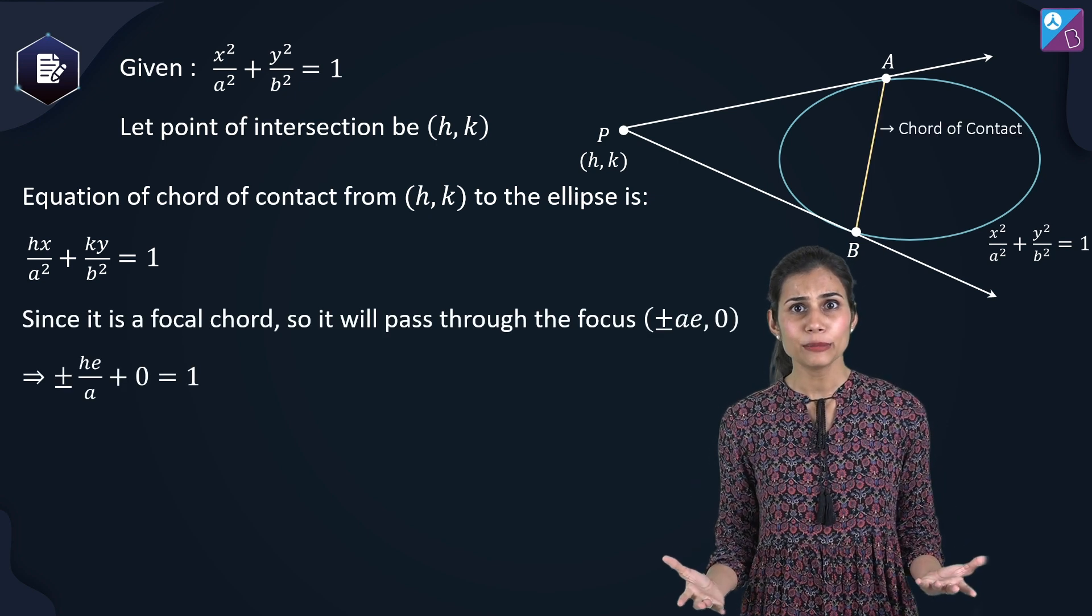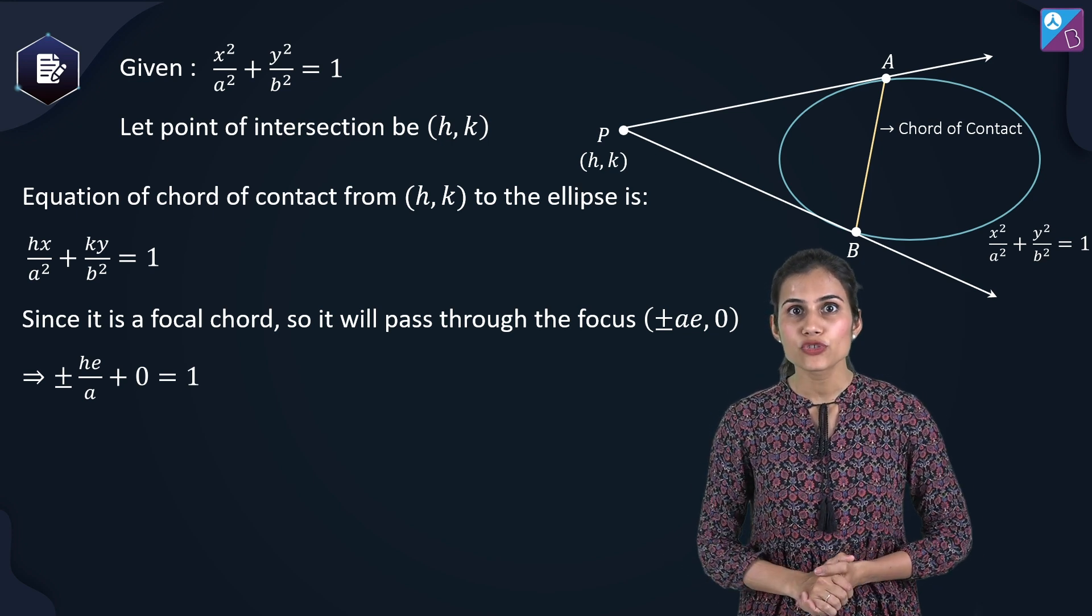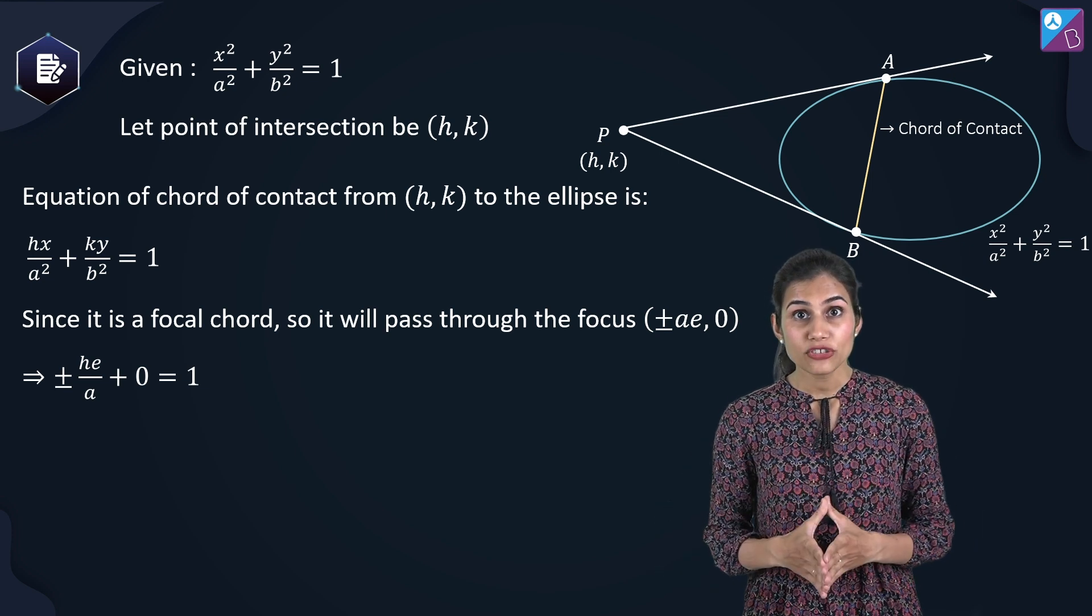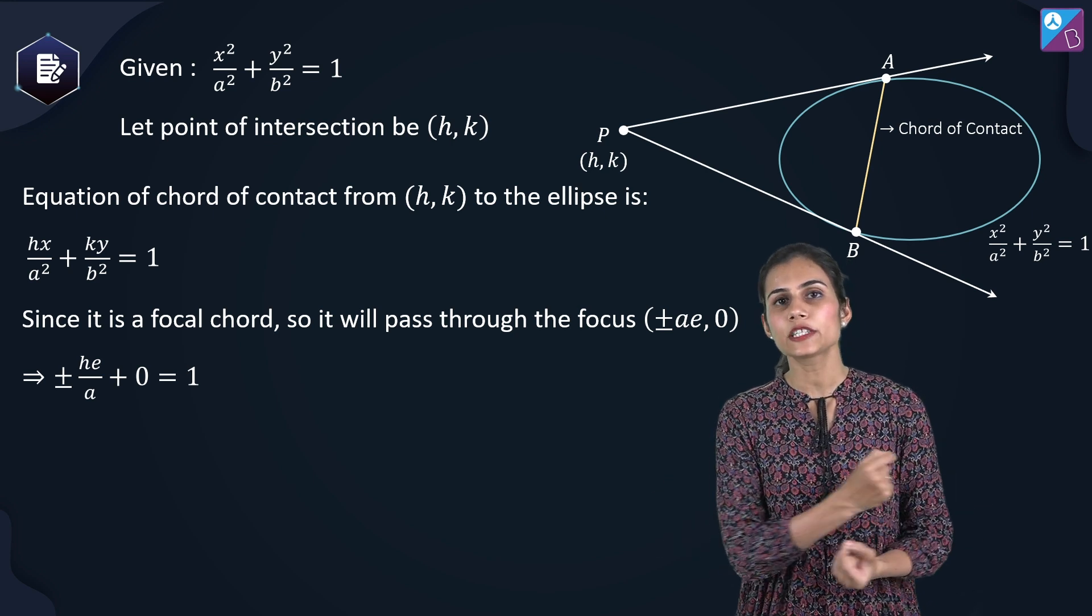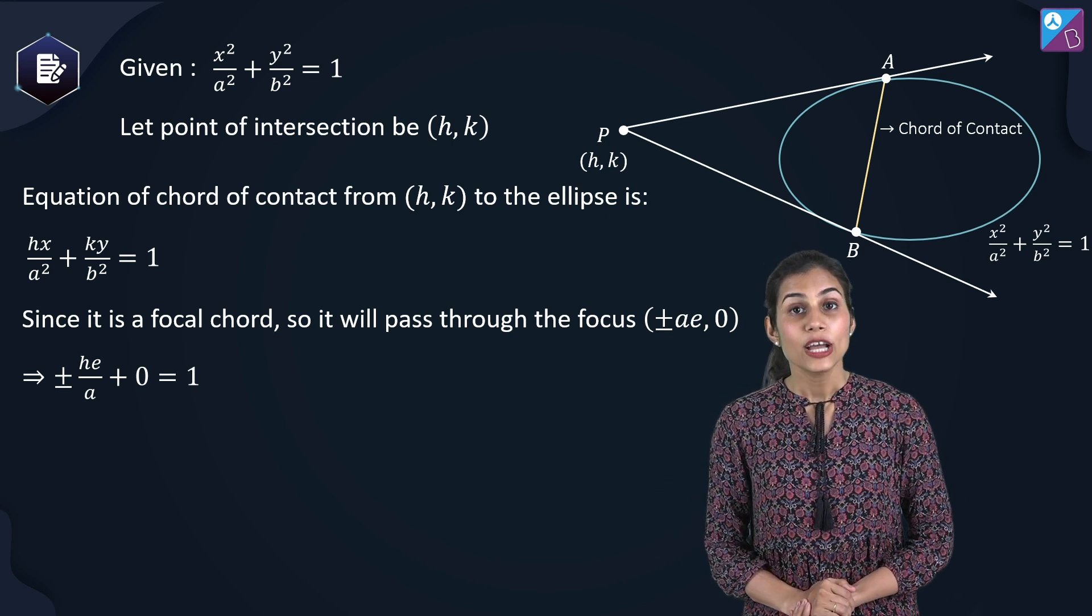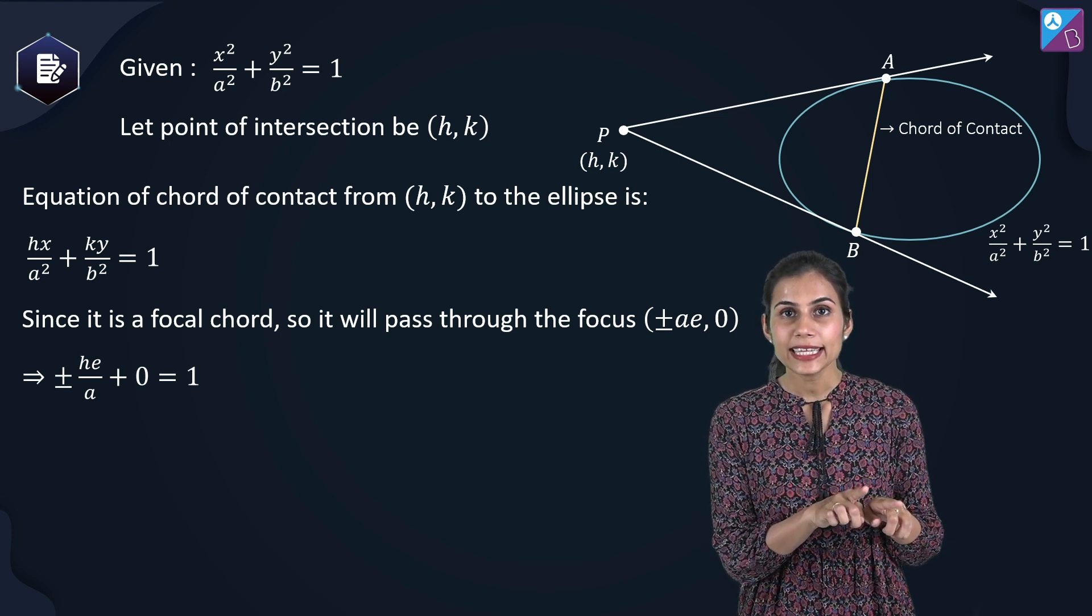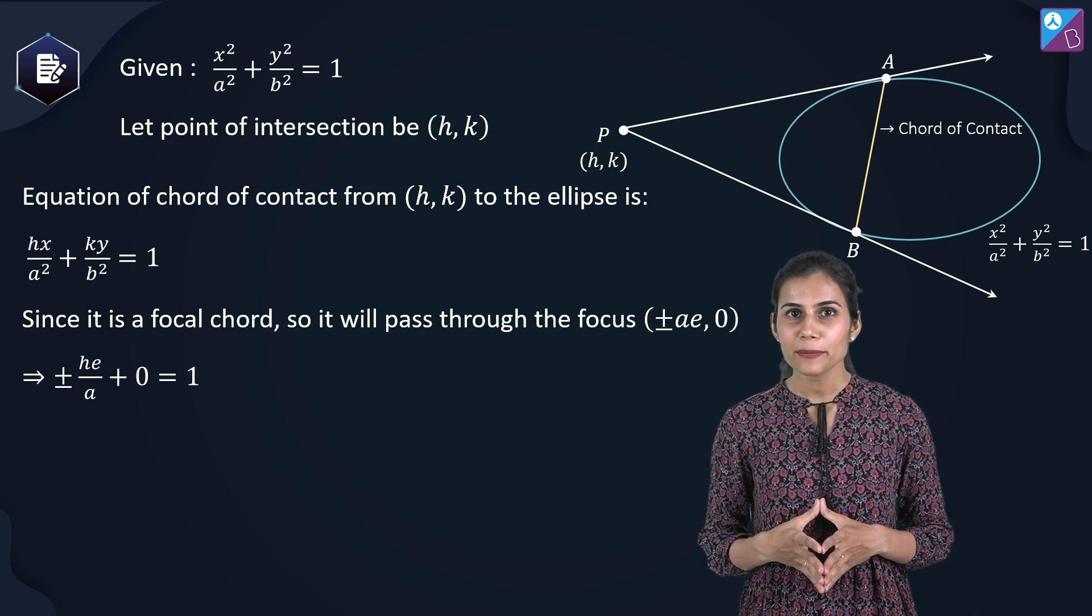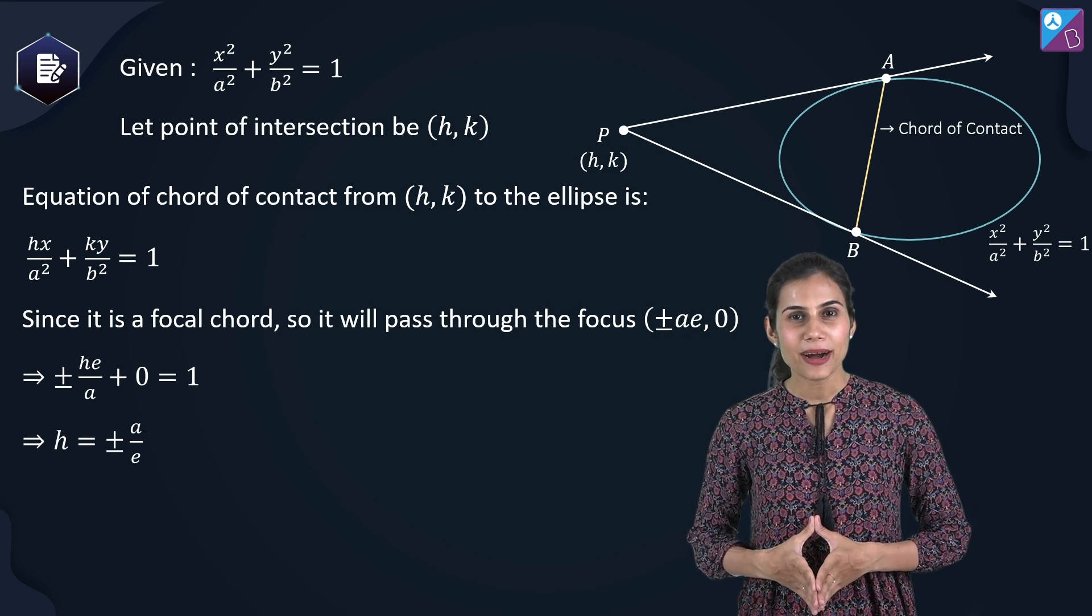But guys, AB is not a random chord. It is the focal chord. That means it is going to pass through either plus ae comma zero or minus ae comma zero. That means plus minus ae comma zero happens to satisfy the equation of my AB chord. Which means in place of x, I am going to plug in plus minus ae and in place of y, I am going to plug in zero. When you simplify this equation, what do you end up getting?